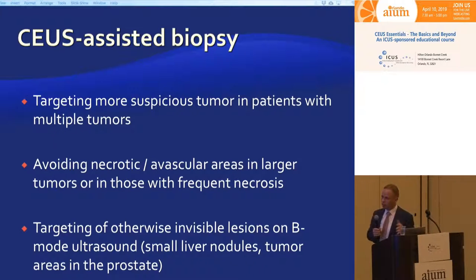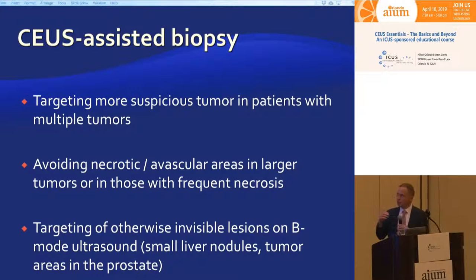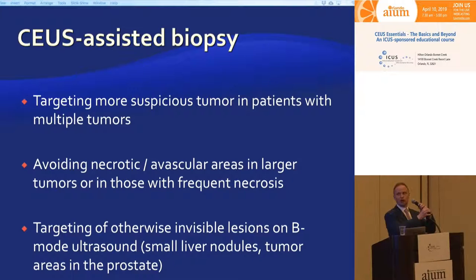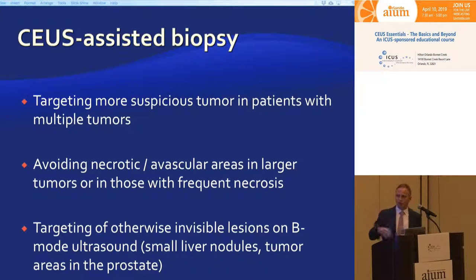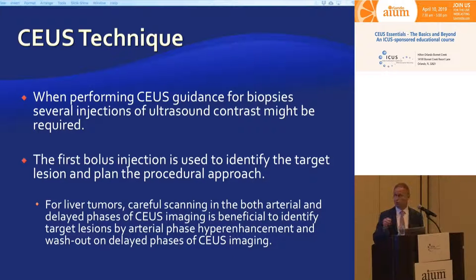We biopsy more and more lesions — we see lots of patients with small tiny liver lesions that we cannot identify on non-enhanced B-mode ultrasound. We also see quite a few patients with large necrotic tumors, especially in patients involved in clinical trials or treated with multiple rounds of chemotherapy. Necrotic tumors are extremely common nowadays, and without contrast-enhanced ultrasound there's almost no way to get enough viable tissue for pathology.